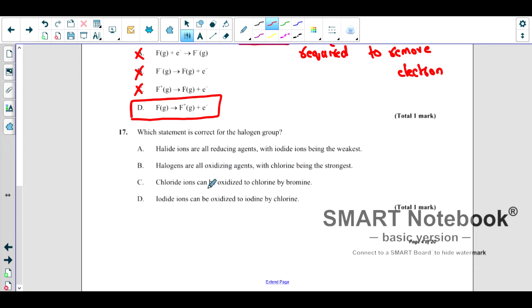Which statement is correct for the halogen group? Are they reducing agents or oxidizing agents? Let's see if they are oxidizing or reducing agents. We know that non-metals, halogens, they normally gain electrons to get stability. When they are gaining electrons, when they are non-metals, they gain electrons, they become halide ions. But they are oxidizing agents. Why? Because when they are gaining electrons, they are helping the other atom or element to become oxidized. When it helps others, it's called oxidizing agent.